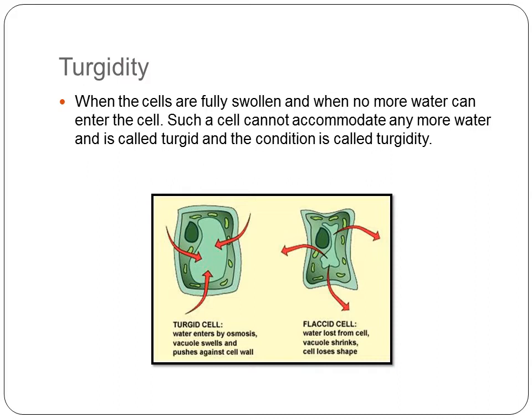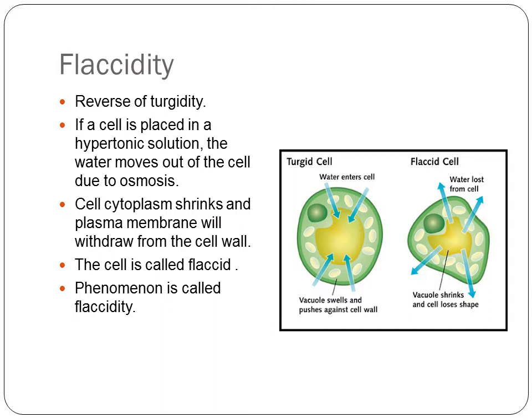Now let us move on to the opposite of turgidity, which is flaccidity. Flaccidity is just the reverse of turgidity. A cell is in a flaccid condition when it is placed in a hypertonic solution. Hypertonic means the solution outside the cell is more concentrated, and thus water moves out of the cell due to osmosis. The water is lost from the cell and the vacuole shrinks.